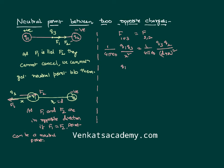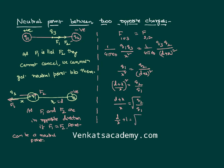Cancelling the common terms, we get q1/x² = q2/(d+x)². Rearranging: (d+x)²/x² = q2/q1. Taking the square root on both sides: (d+x)/x = √(q2/q1). Simplifying: d/x + 1 = √(q2/q1), which gives d/x = √(q2/q1) − 1, and therefore x = d / (√(q2/q1) − 1).